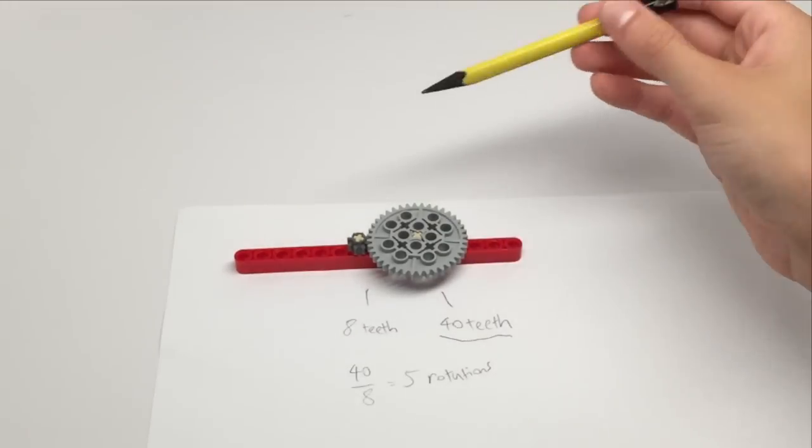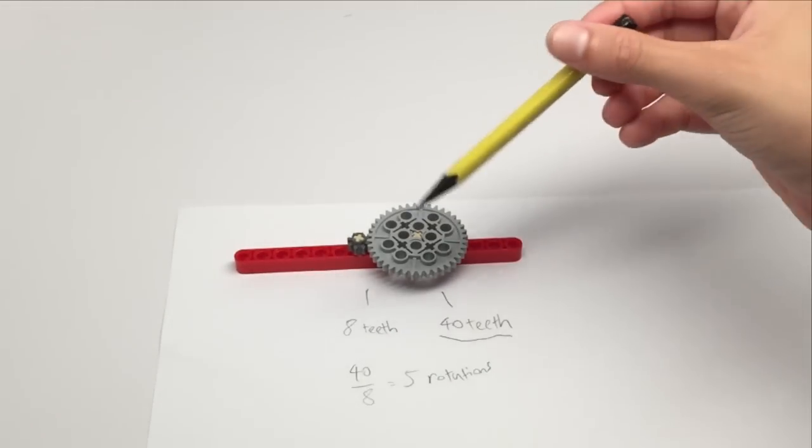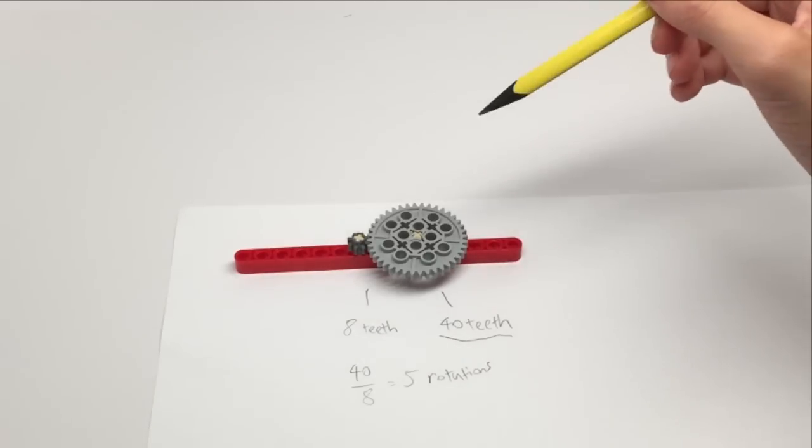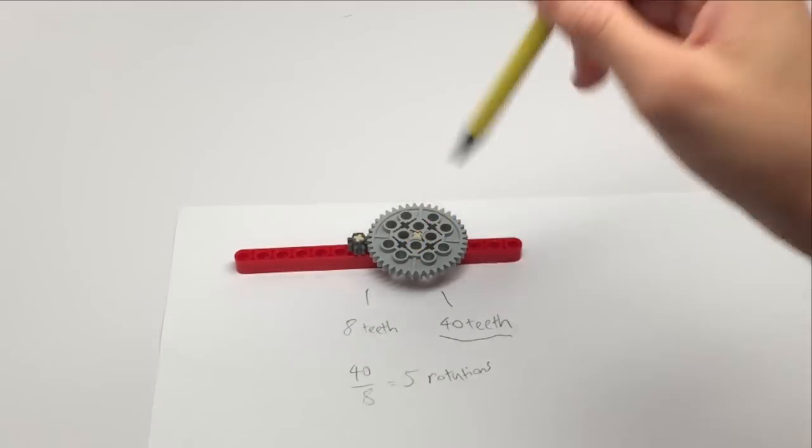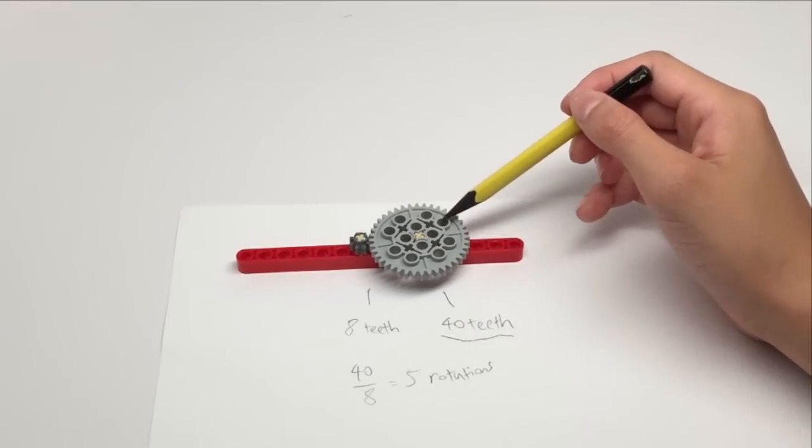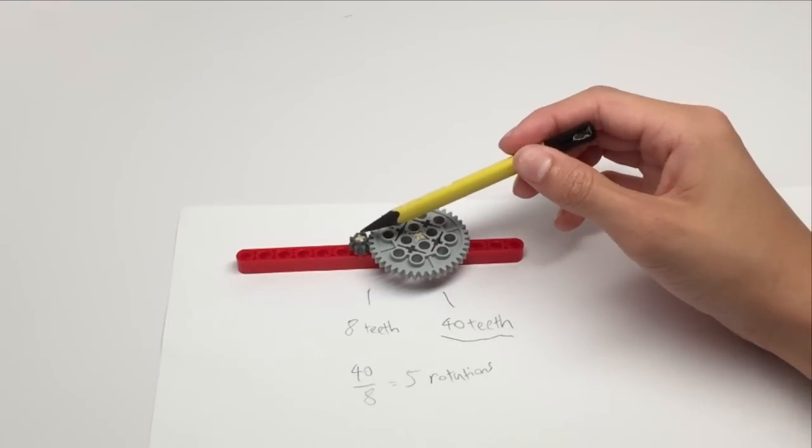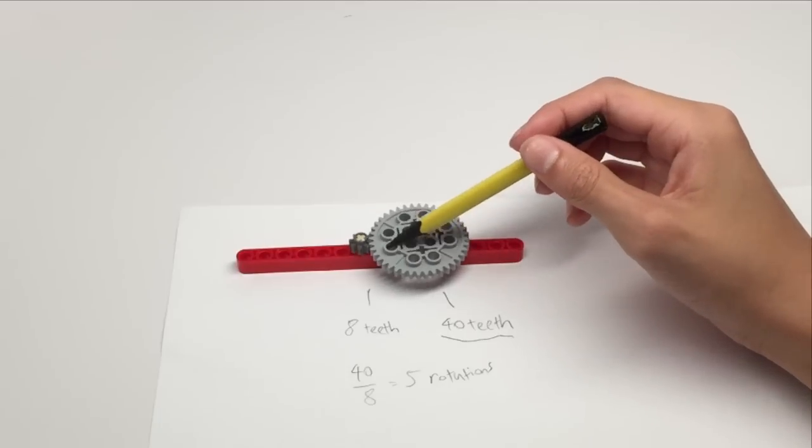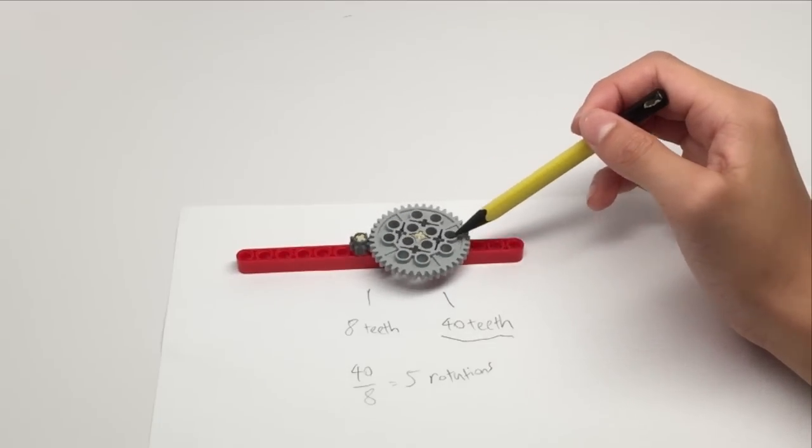And whenever you're in doubt of whether it's speeding up, or as we call gearing up, or slowing down, or as we call gearing down, you could try it out and see and remember that the smaller gear will spin much more times for one rotation of the bigger gear.